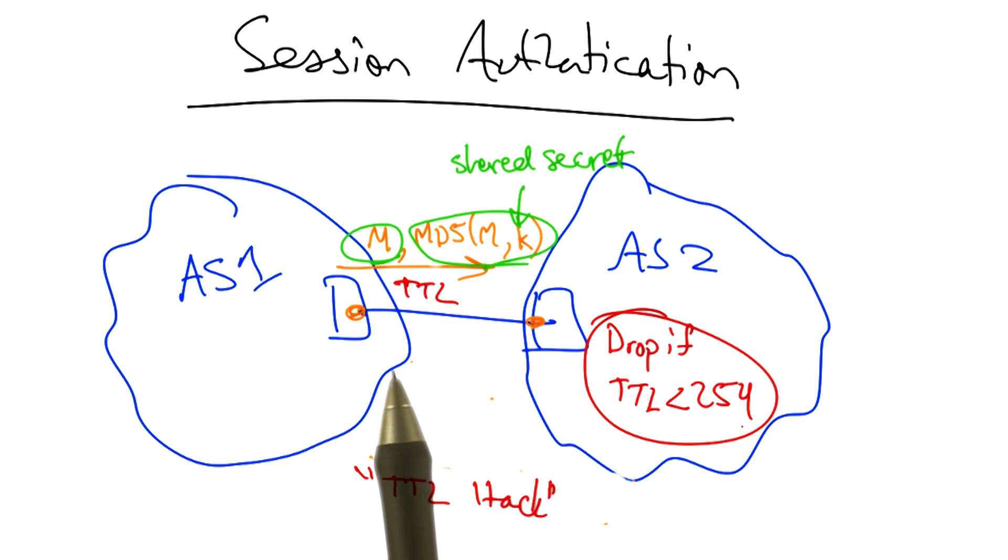Because most EBGP sessions are only a single hop and attackers are typically remote, it is not possible for the recipient AS to accept a packet from a remote attacker. Because likely that attacker's packets will have a TTL value of less than 254. This defense is aptly called the TTL hack defense for BGP session authentication.